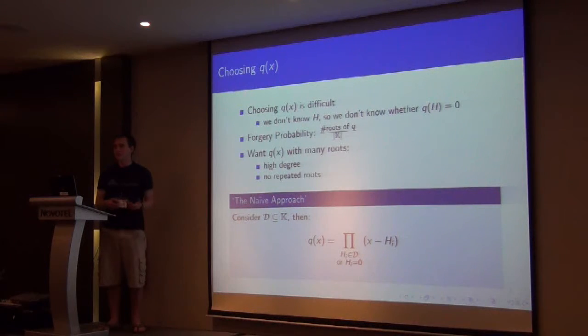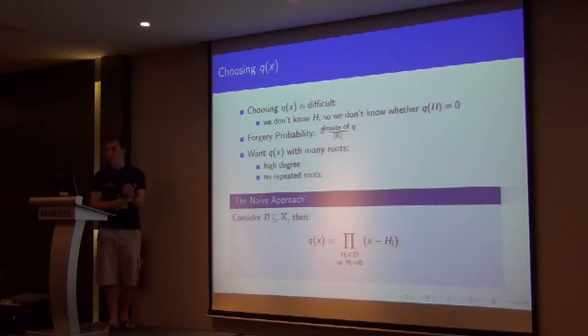So we pick a forgery polynomial with high degree, and with no repeated roots, because that's the sort of optimal effect.